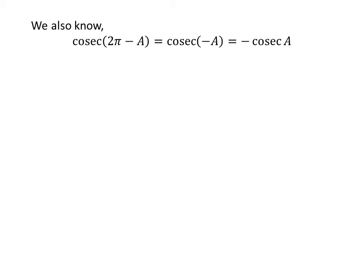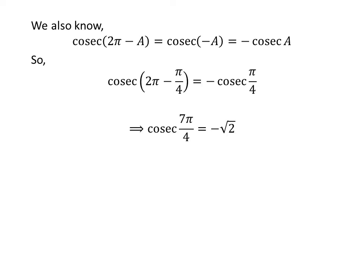We know the values of cosecant of x repeat after an interval of 2π, so cosecant of (2π − a) is equal to cosecant of (−a). We also know the trigonometric identity cosecant of (−a) is equal to minus cosecant of a. Applying this identity as before, we get cosecant of 7π/4 is equal to minus √2.